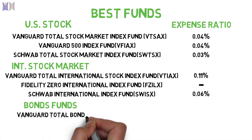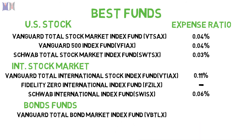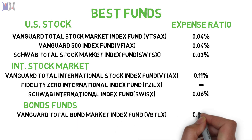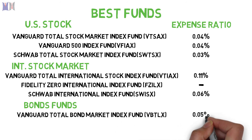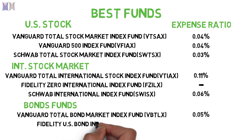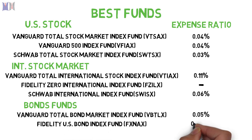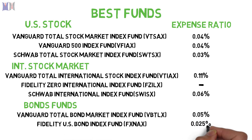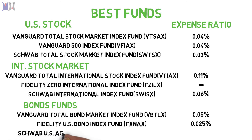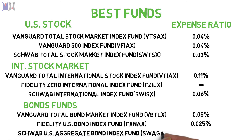For bond funds: the Vanguard Total Bond Market Index Fund with an expense ratio of 0.05%, the Fidelity US Bond Index Fund with an expense ratio of 0.024%, and the Schwab US Aggregate Bond Index Fund with an expense ratio of 0.04%.